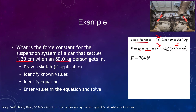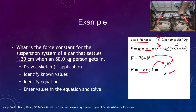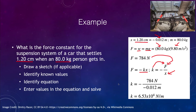Now that we know the force and the displacement, we can calculate the force constant. The force is given by negative k times x, so solving for k gives k equals negative F over x. Putting in the numbers: negative 784 Newtons divided by negative 0.012 meters. The two negatives cancel, giving a positive force constant of 6.53 times 10 to the fourth Newtons per meter.